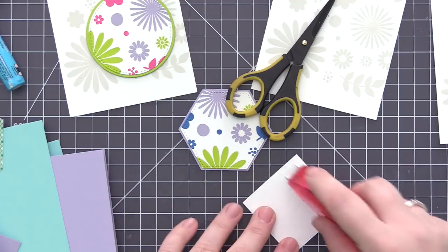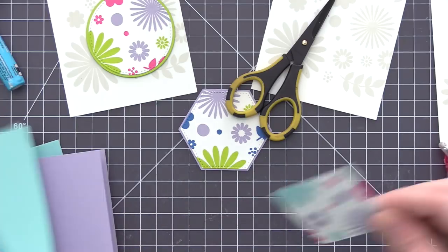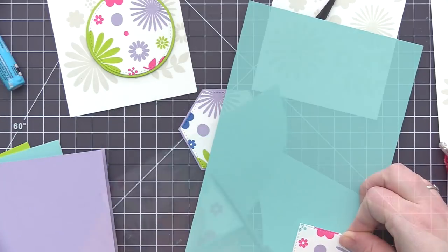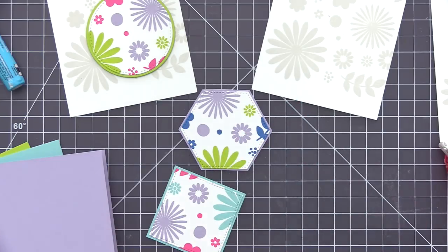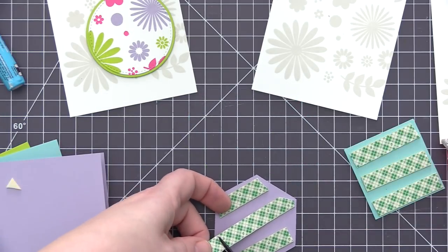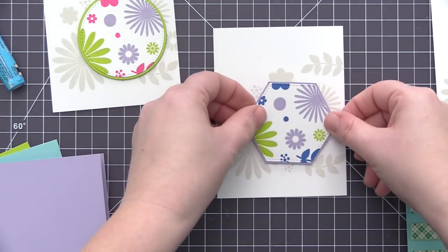And then when you're adding them to the panel, you just kind of want to turn them and move them around until you have the patterns completely lined up. And you can see on the circle one there that I have already finished, the large flower, all the petals line up nicely, and then all of the leaves and everything else that kind of goes off the edge of there lines up with the panel as well as the background.